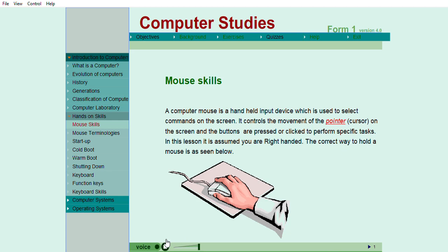A computer mouse is an input device which is used in conjunction with the keyboard to input data. It controls the movement of the pointer or cursor on the screen and the buttons on top of the mouse are pressed or clicked to perform specific tasks.